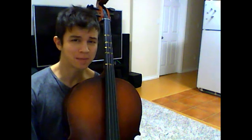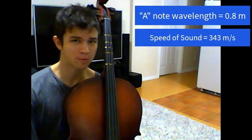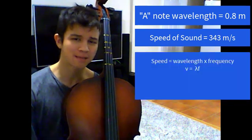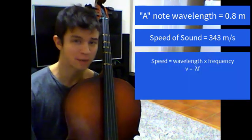When looking at a wave speed, we define the time it takes for one wavelength to pass as one cycle. We know that the open A note on the violin has a wavelength of about 0.8 meters. Traveling at the speed of sound of 343 meters per second, we can calculate how many cycles pass every second by dividing this velocity by the wavelength.